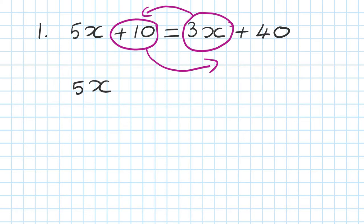Now, because it's 3 — nothing in front of 3 means positive 3. So plus 3, we move on this side, becomes minus 3, so it becomes minus 3x. It's equal to 40 — I just write it down because I didn't do anything with that. That's right, 40.